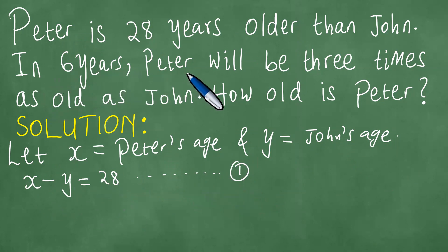In six years, Peter will be three times as old as John. So in six years, Peter's age will be x plus 6.